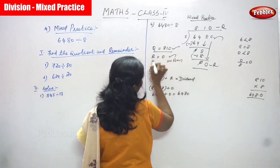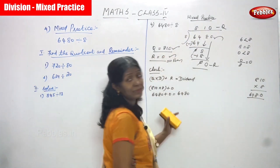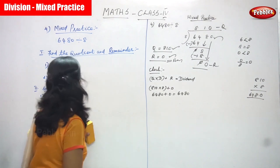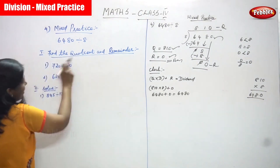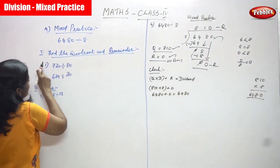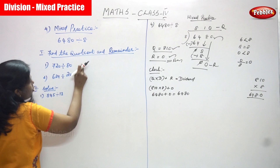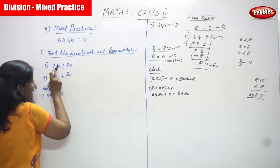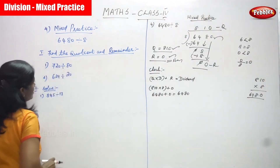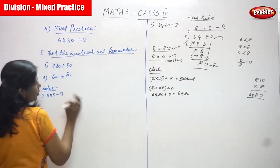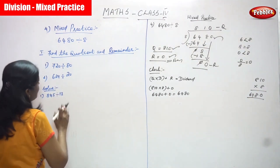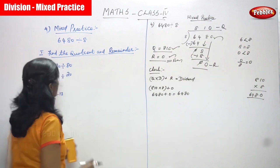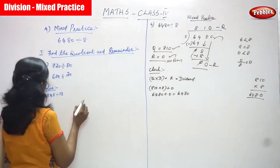That is quotient and remainder, both are correct. We will go for the next sum. That is: find the quotient and remainder. This is the dividend and this is the divisor. So you are going to solve the problem, then you can get the quotient and the remainder. For both sums you have to do the same.